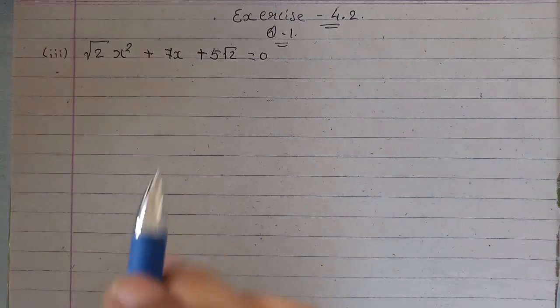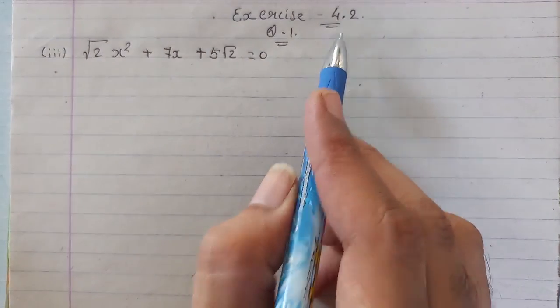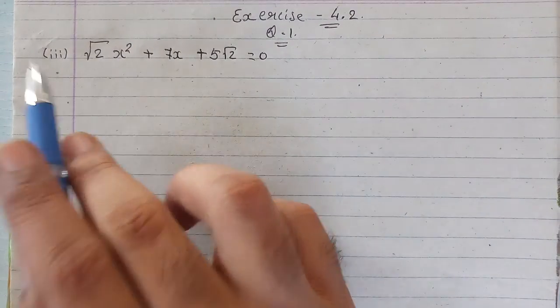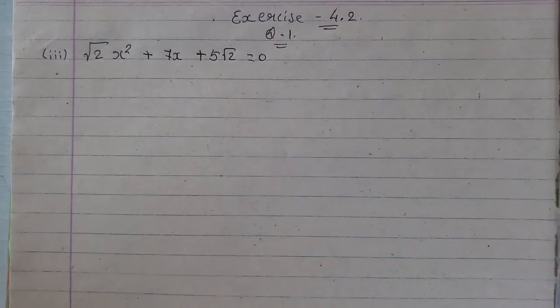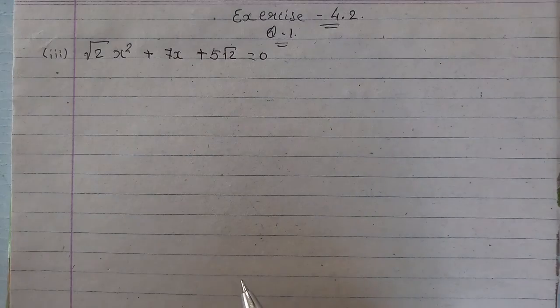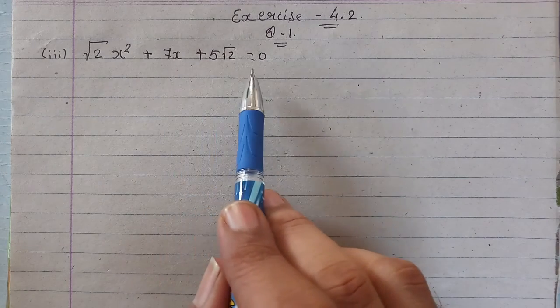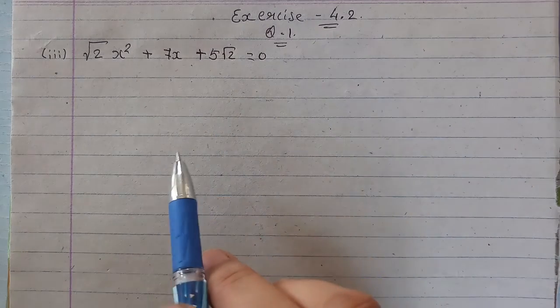Next, we are going to continue with exercise 4.2, question number 1, sum number third. Under root 2x squared plus 7x plus 5 root 2 is equal to 0. That is our given quadratic equation.